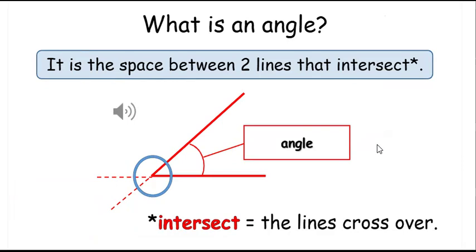An angle is the space between two lines that intersect. Intersect means the lines cross over.